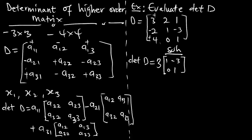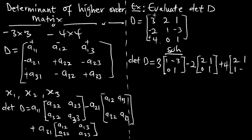I'll pick positive 4 and the sub-matrix is going to be: 2, 1, 1, negative 3.